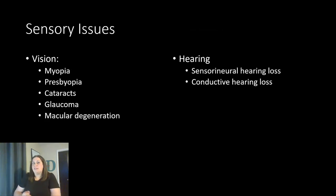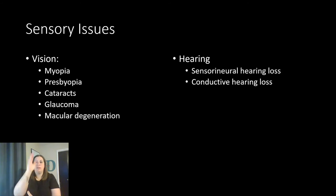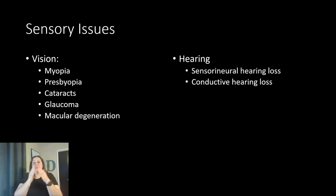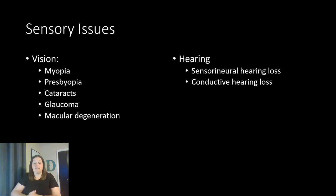Let's take a closer look at some of these sensory issues. Myopia is one of the most common vision issues, known as nearsightedness — you can see up close but not far away. This is where the bending of light is not hitting the retina properly, so glasses or contacts are needed to adjust that. Presbyopia happens with age and decreases the elasticity and ability of the lens and cornea to accommodate vision.